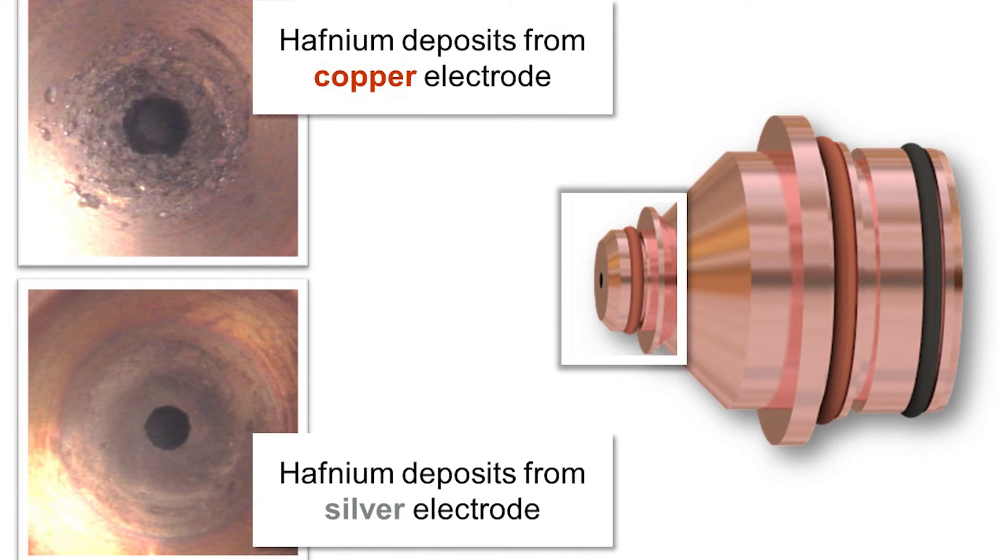In silver electrodes, pictured here, the stronger bond between silver and hafnium and better thermal conductivity of silver results in less material deposited on the inside nozzle wall, extending the nozzle life.